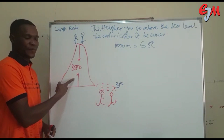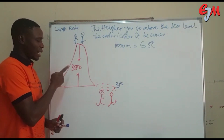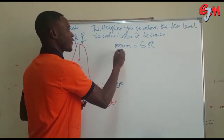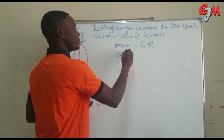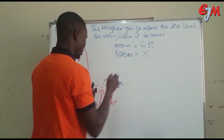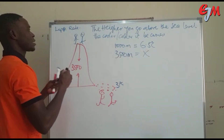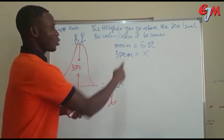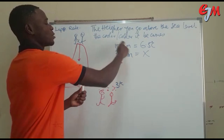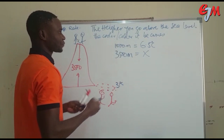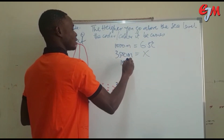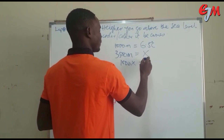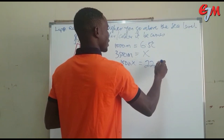If temperature drops by 6.5 degrees Celsius at 1,000 meters, let us ask ourselves: what would the temperature drop be at 3,500 meters? We set up a proportion. At 3,500 meters, the temperature drop is x. So we have 1,000x equal to 3,500 multiplied by 6.5, which gives us 22,750.